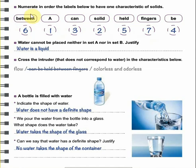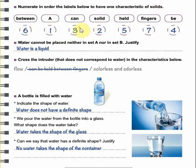Now we are going to number in order the labels below to get one characteristic of solids. We have to say: a solid can be held between fingers.